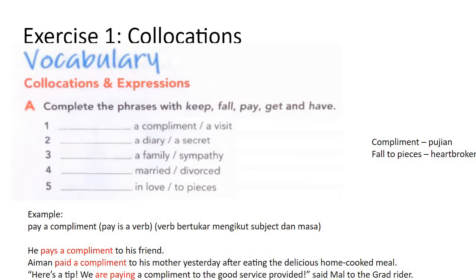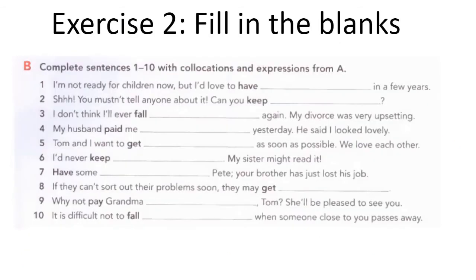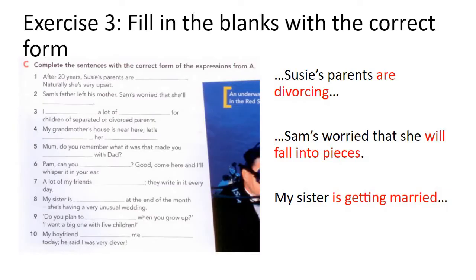Continuing the answers: number three — have a family, have sympathy; number four — get married, get divorced; number five — fall in love, fall to pieces. Exercise two is very easy — for example: 'I'm not ready for children now but I would love to have a family in a few years.' You can fill in the rest.